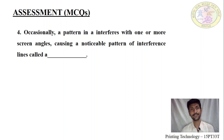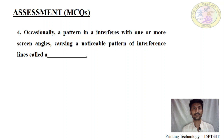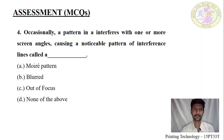Fourth question: Occasionally a pattern in an image interferes with one or more screen angles causing a noticeable pattern of interference lines. What is it called? In color separation, each color has its own screen angle — Cyan has a different angle, Magenta has a different angle, Yellow has a different angle, and Black has a different angle. If two color angles interfere or are the same, then what do you get? Options: Moiré pattern, blurred, out of focus, or none of the above.